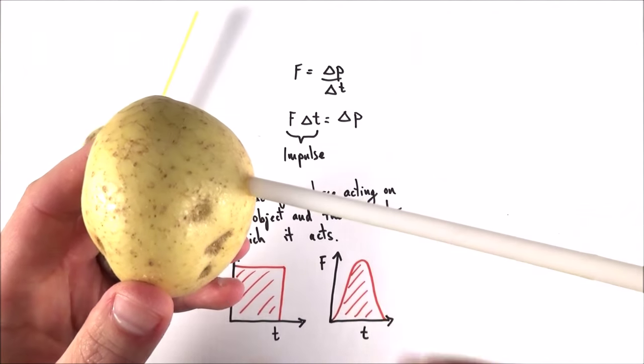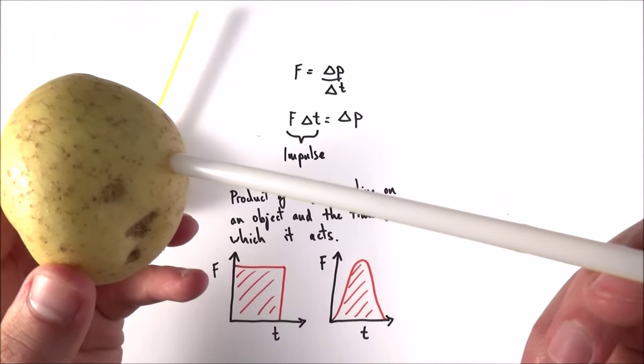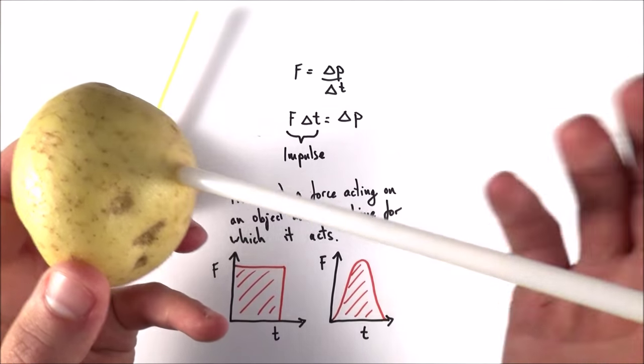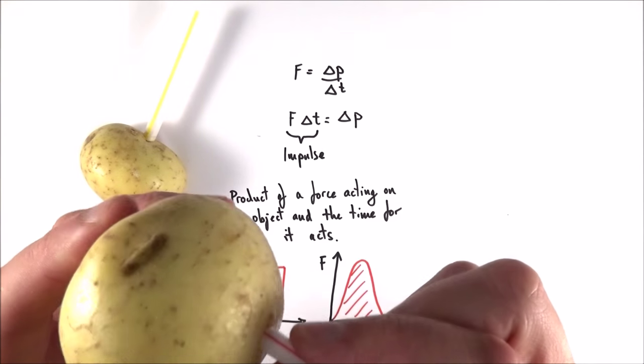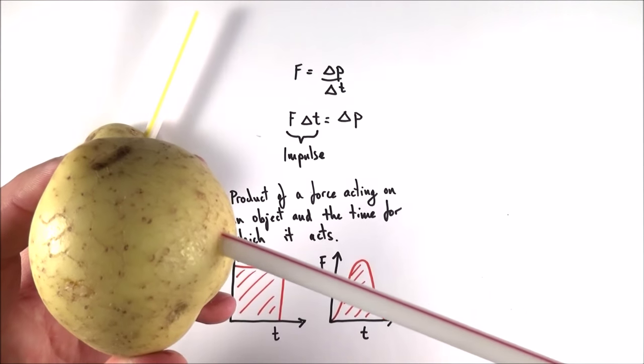So in order to actually get the straw all the way through the potato, it's all about how quickly we change the momentum of the straw in my hand that we had initially. If we change it quickly, then we're going to have a bigger force at the end of the straw, which means the straw actually goes further into that potato.